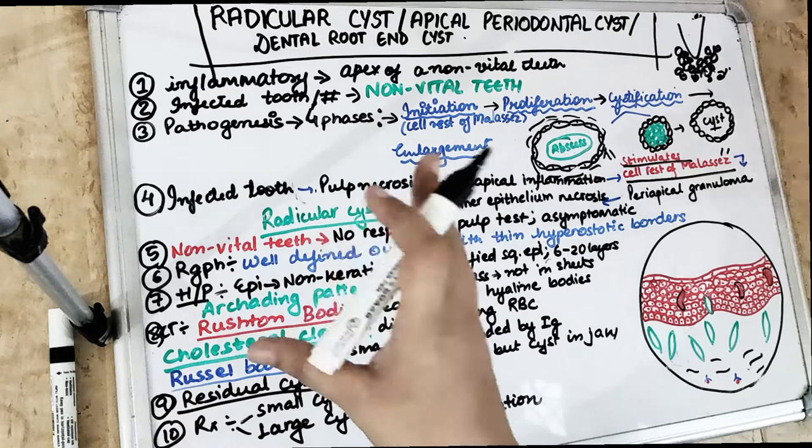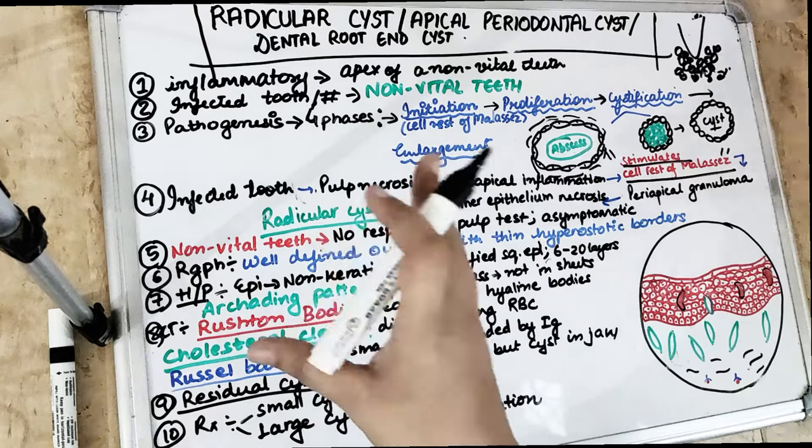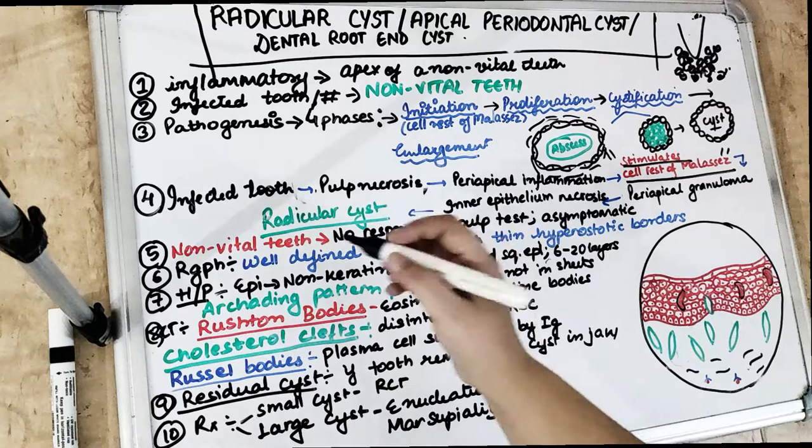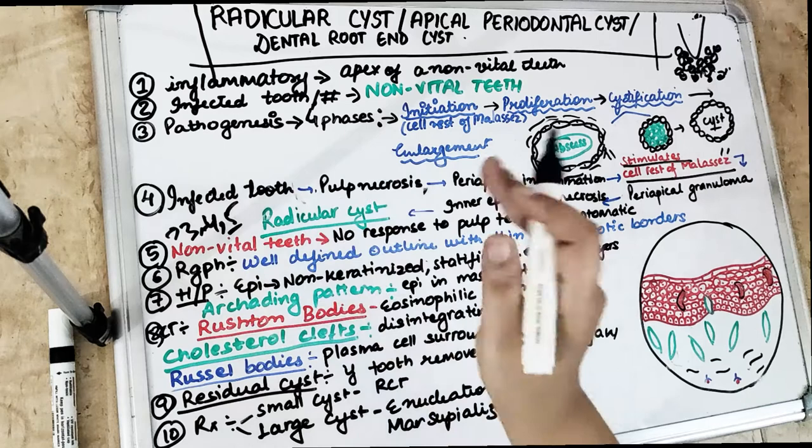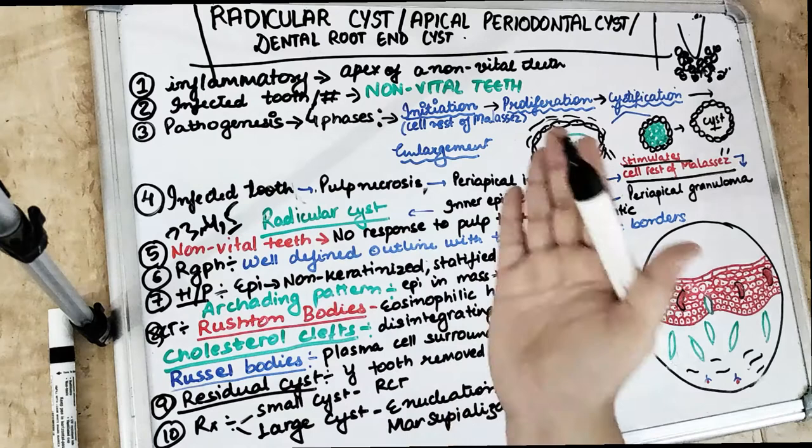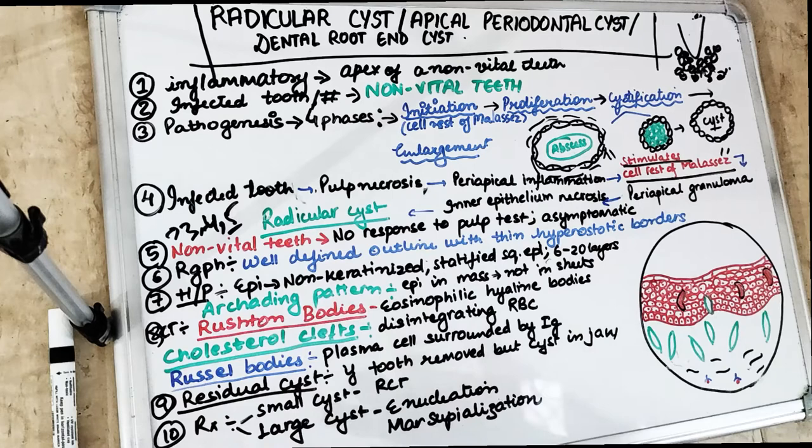Coming to demographics: the radicular cyst affects the 3rd, 4th, and 5th decades of life, because the caries rate is high and teeth become non-vital. It is most common among males. Regarding location, unlike OKC and dentigerous cyst where the mandible is affected more, in the case of radicular cyst the maxilla is affected more.